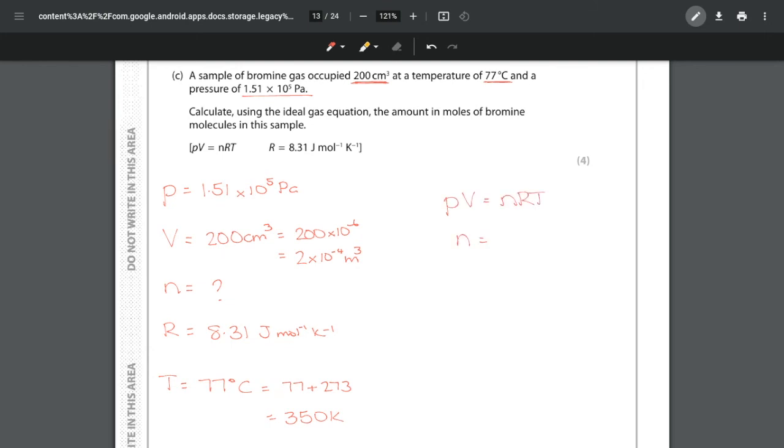Now we can substitute everything in. We know that PV = nRT, and we can rearrange it to tell us that the number of moles is the pressure times the volume divided by the gas constant times temperature. Then we just substitute everything in: 1.51 × 10⁵ multiplied by 2 × 10⁻⁴.